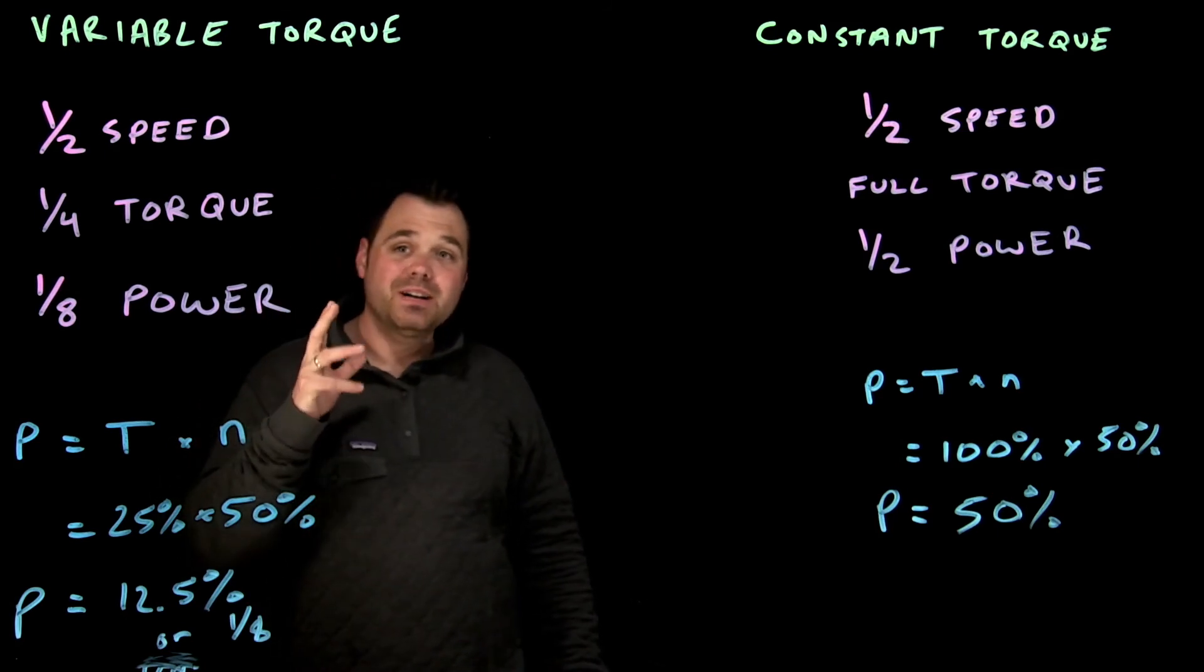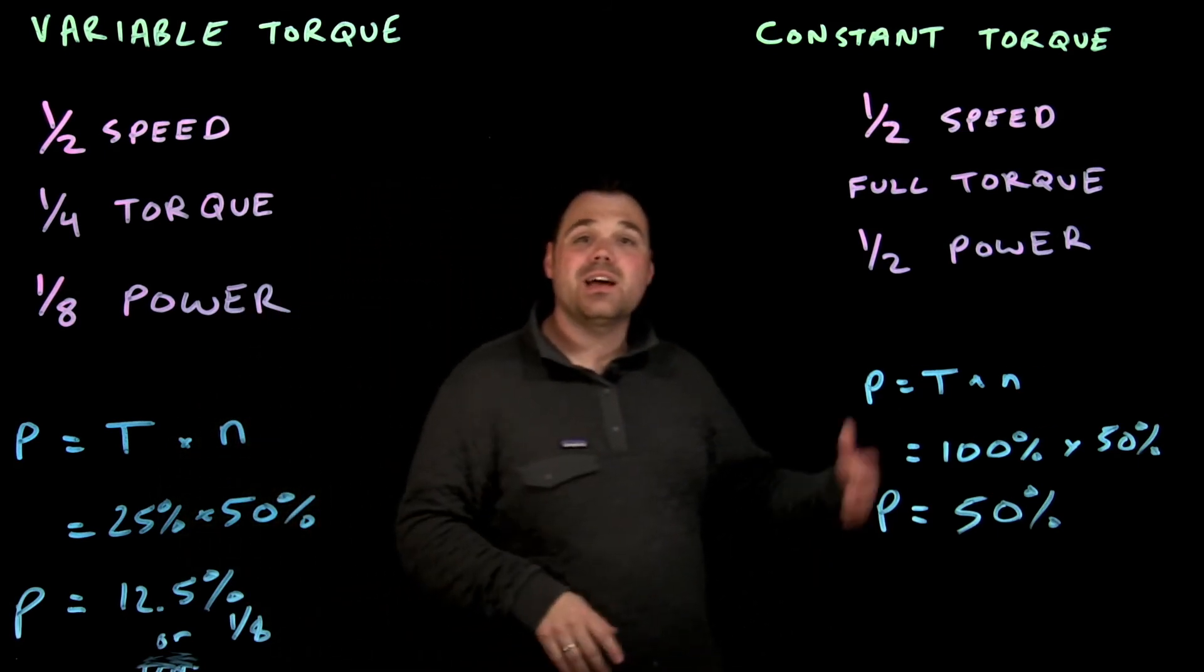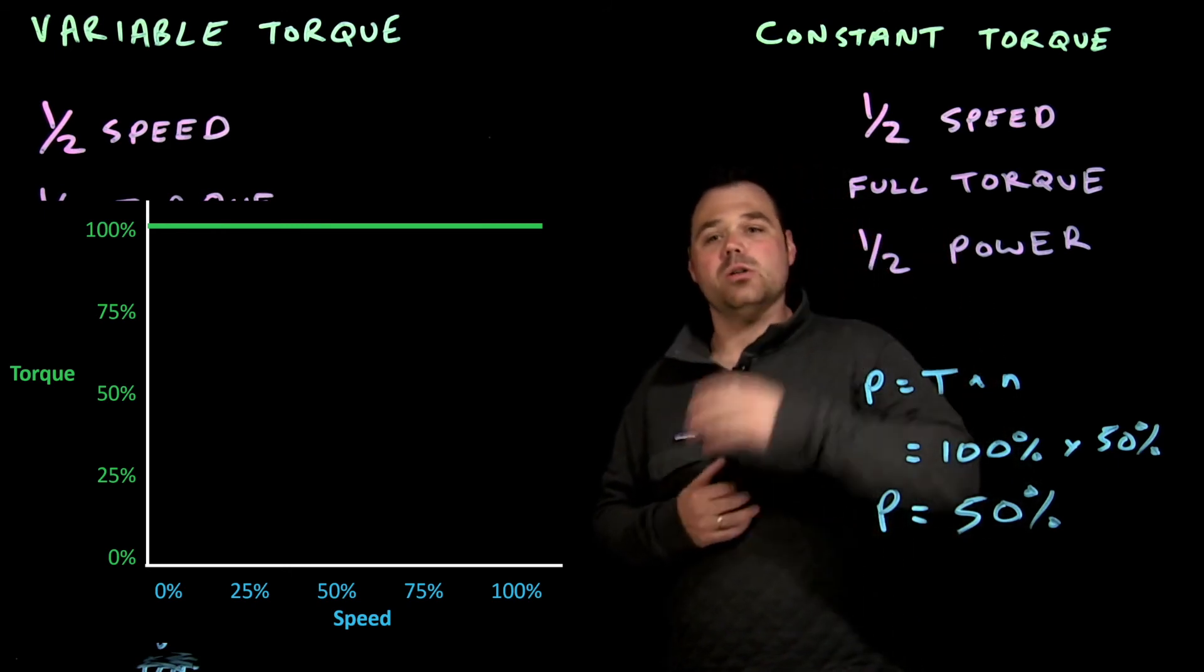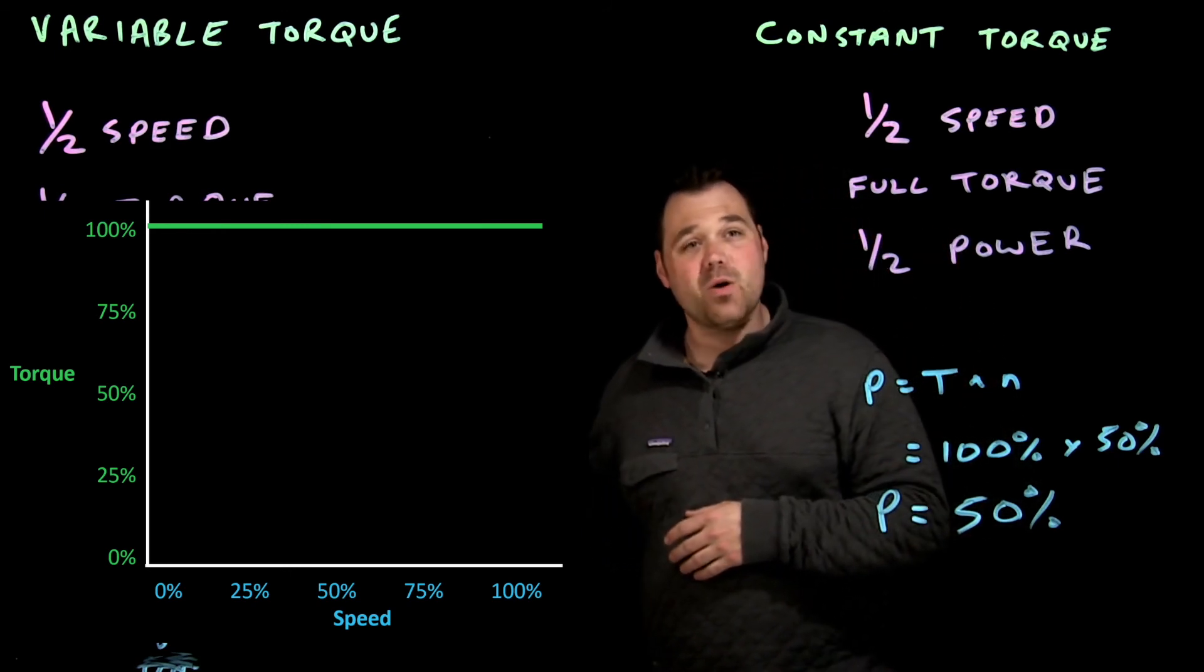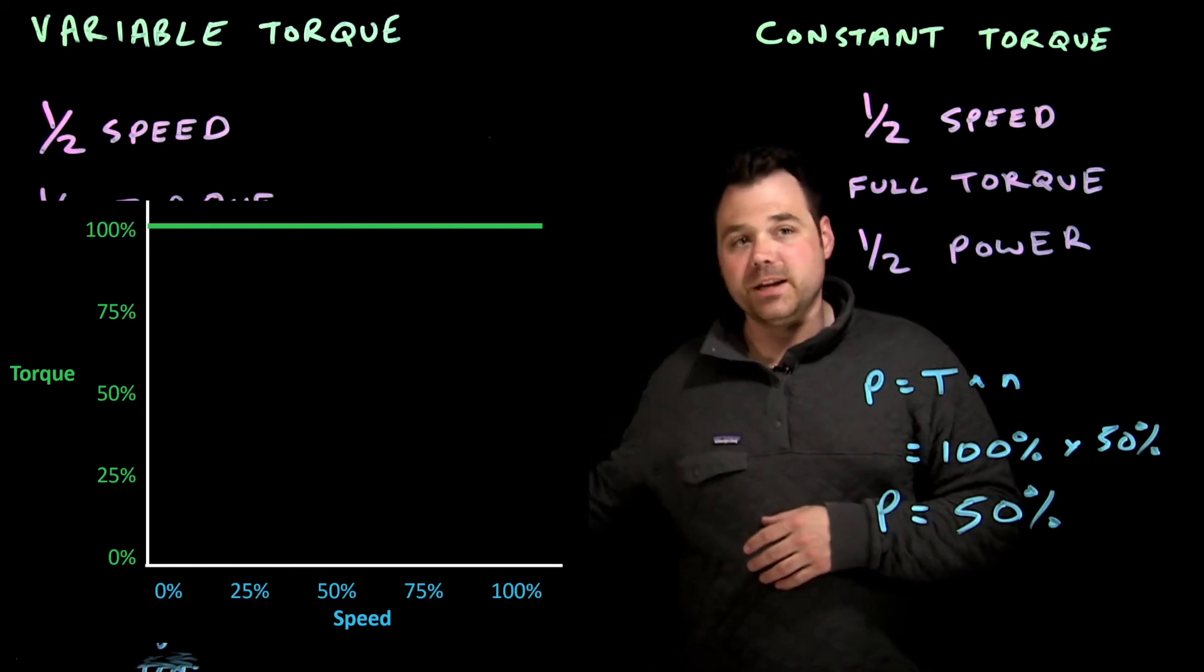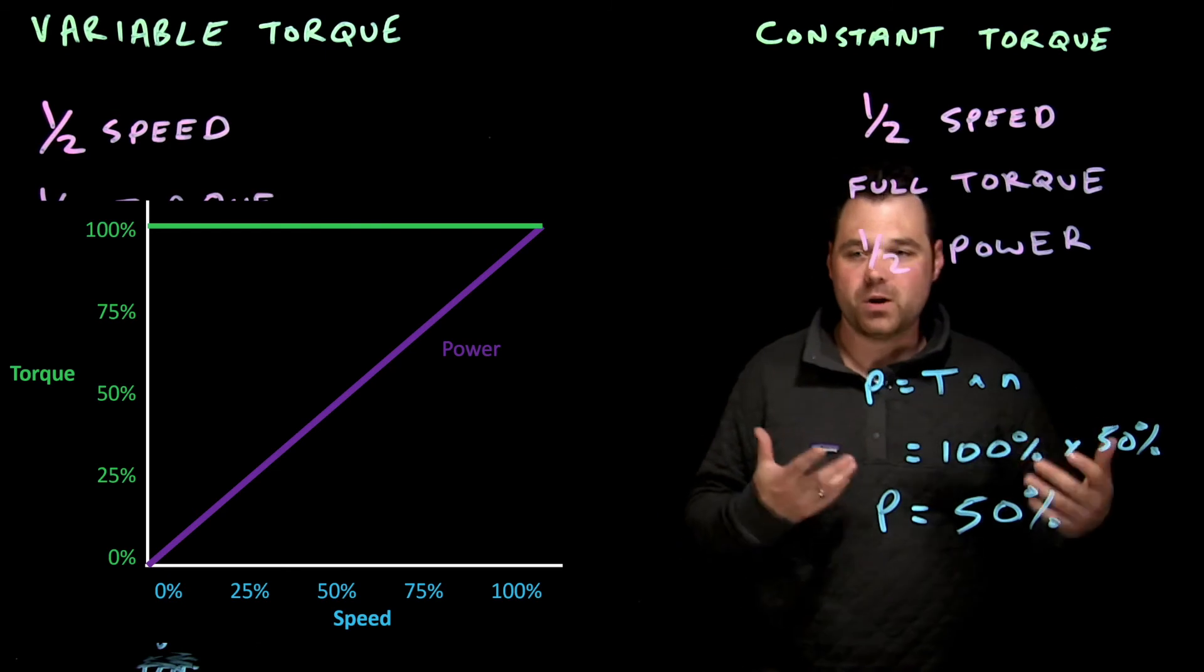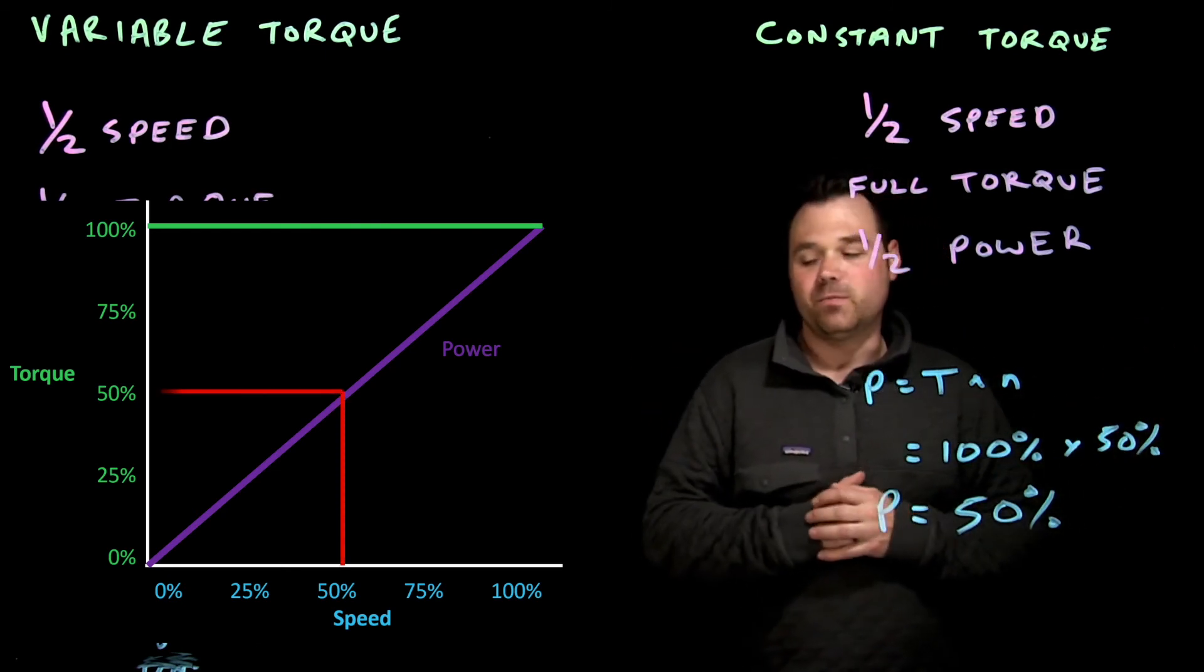Now, the graph for that one looks something like this. You can see, we have that constant torque along the top, and then our power is just linear from the bottom straight up at 50% speed. I'm 50% power required, and respectively through that.